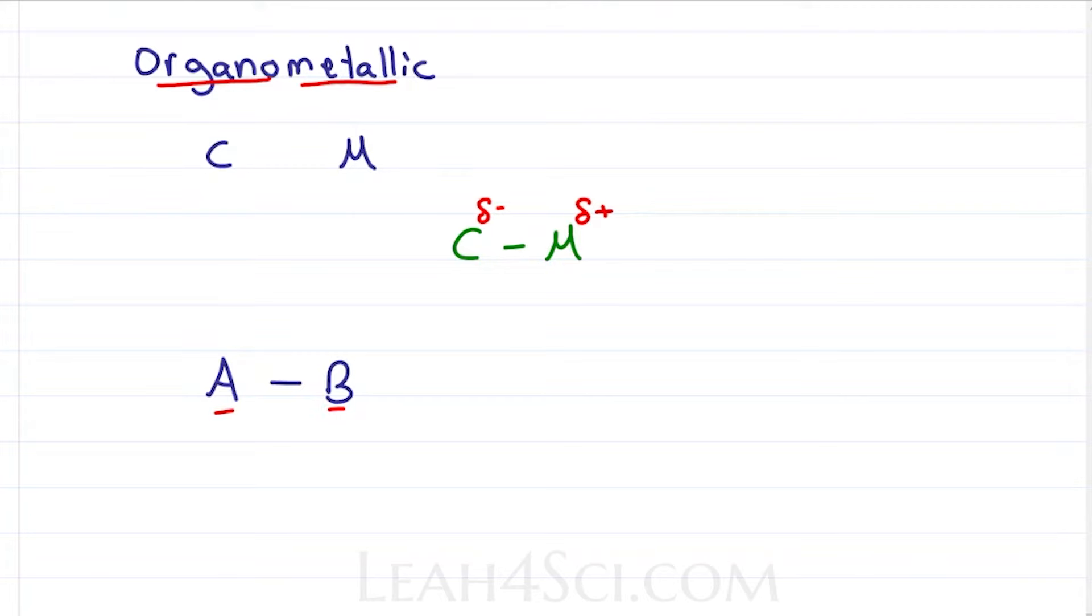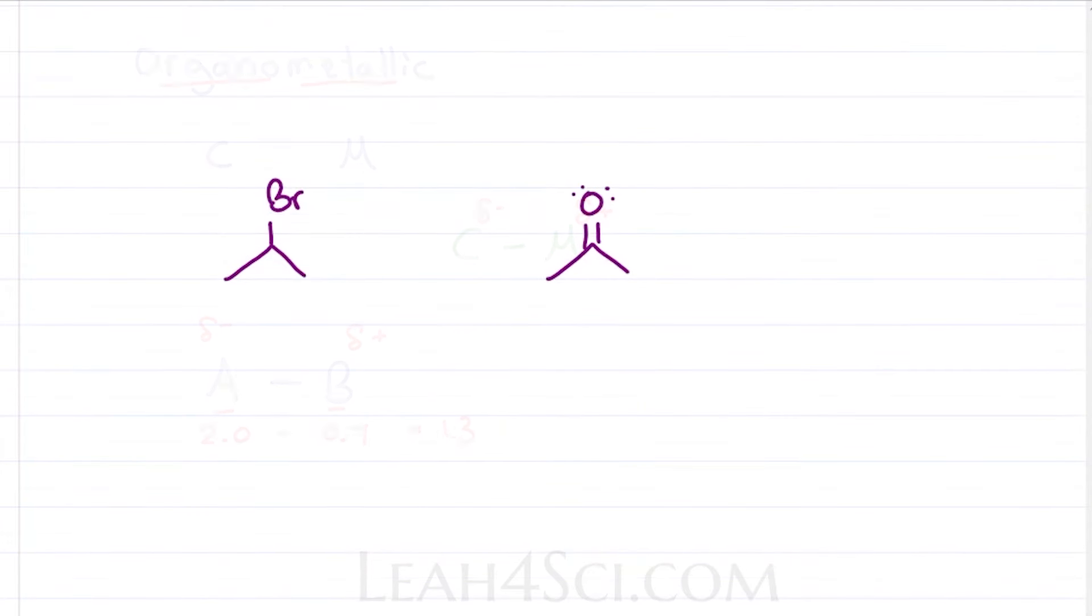For example, if atom A has an electronegativity of 2.0 and B is 0.7, the difference is 1.3, telling us that the more electronegative atom A has a partial negative charge, and the less electronegative atom B has a partial positive charge due to the unequal sharing of electrons.